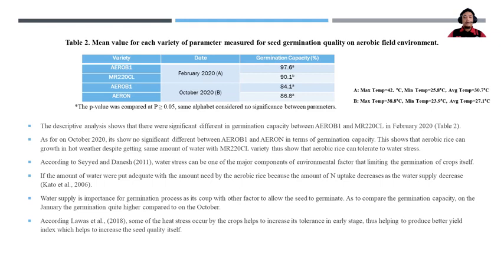Adequate water supply is needed for aerobic rice, as nitrogen uptake decreases when water supply decreases. Water supply is important for the germination process to allow seeds to germinate, as compared to germination capacity in January. Germination is quite high compared to October, and heat stress helps increase the tolerance stage to produce a better yield index, which helps increase seed performance itself.